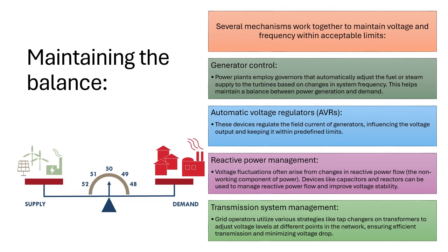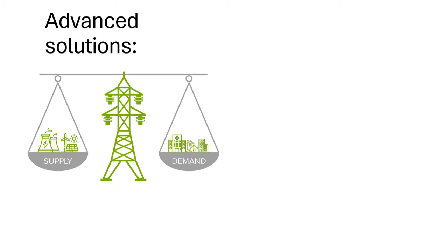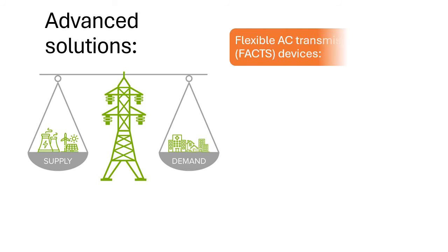Transmission system management: grid operators utilize various strategies, like tap changes on transformers, to adjust voltage levels at different points in the network, ensuring efficient transmission and minimizing voltage drop.